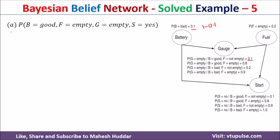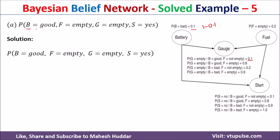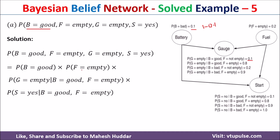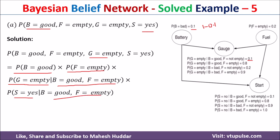Given these probabilities, we need to answer a few questions. The first is: calculate the probability that battery is good, fuel is empty, gauge is empty, and start equals yes. To calculate this, battery does not depend on anything, so we write P(battery = good). Fuel also does not depend on anything, so we write P(fuel = empty). For gauge, which depends on battery and fuel, we write P(gauge = empty | battery = good, fuel = empty). For start, which also depends on battery and fuel, we write P(start = yes | battery = good, fuel = empty).